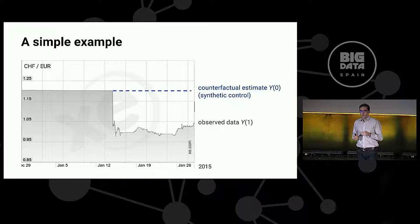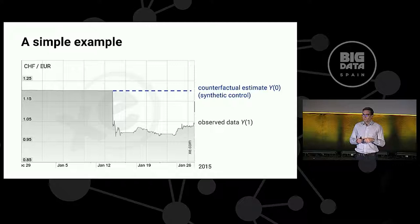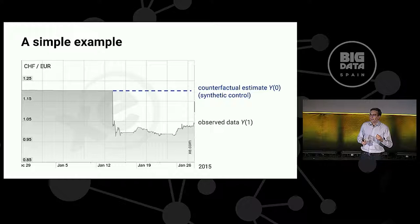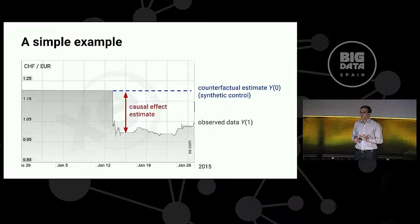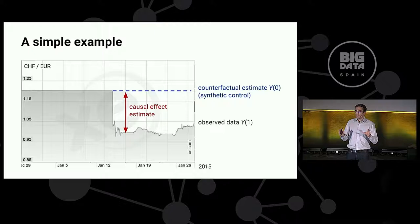Abadie and colleagues have introduced the term synthetic control, popularized that term. Since we don't really have an experiment, there isn't really a control in the experiment sense, and yet we want to be able to estimate something that looks just like a control. That's important because the difference between the counterfactual and the actual observed data is our causal effect estimate. And as a sort of rule of thumb, whenever you draw a causal effect in a time series chart, you want to draw it as a vertical arrow. Whenever you see horizontal or diagonal arrows, they're almost always wrong.